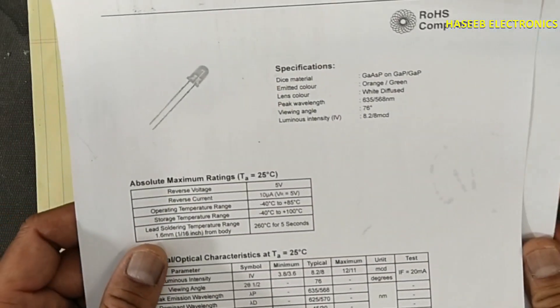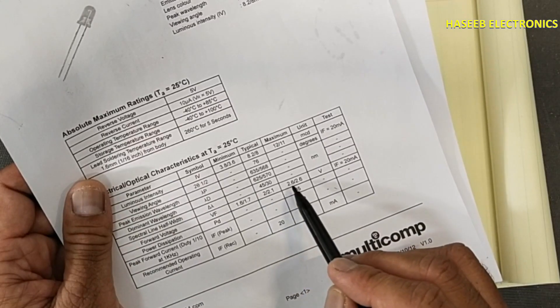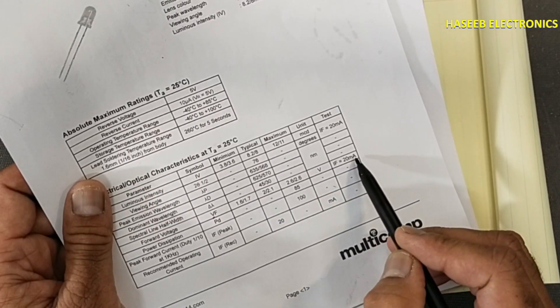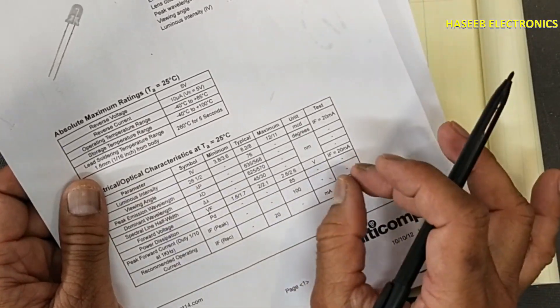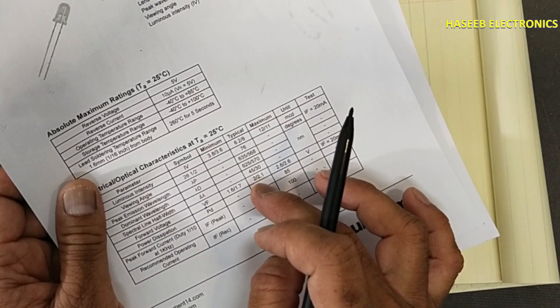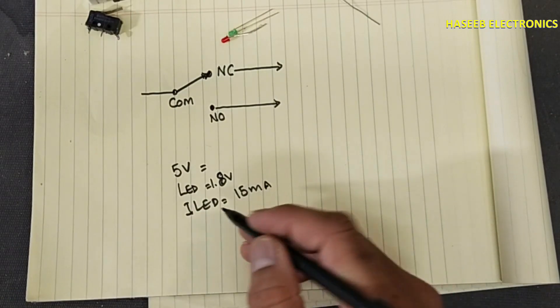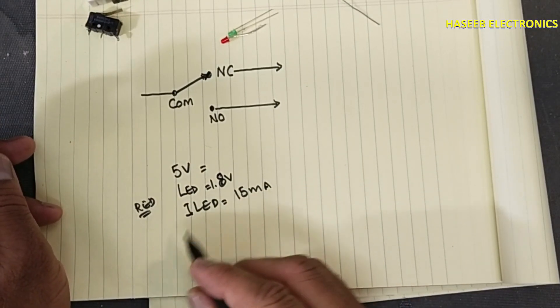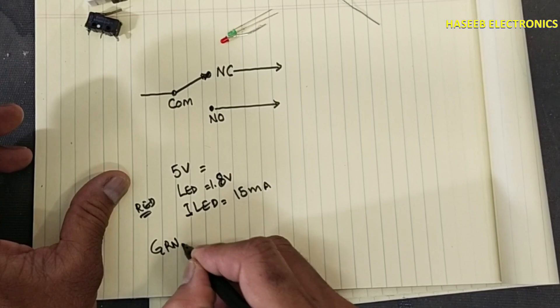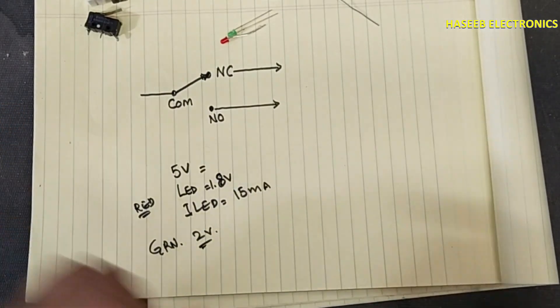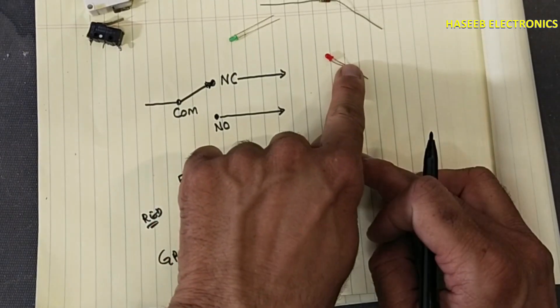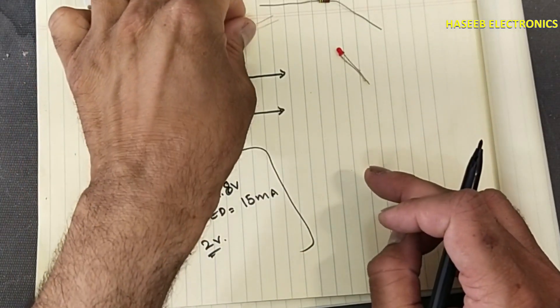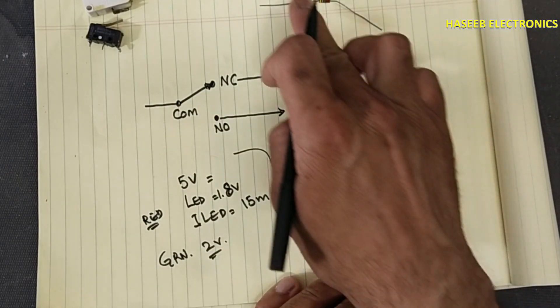You will see this green LED typical 2 volt to 2.6 volt forward voltage, 20 milliampere. So we will consider 15 milliampere and nominal drop voltage will be 2 volt. For red LED 1.8 volt, green LED 2 volt. Because we are applying 5 volts and this LED will consume only 1.8 volts or 2 volt, so we need a resistor.